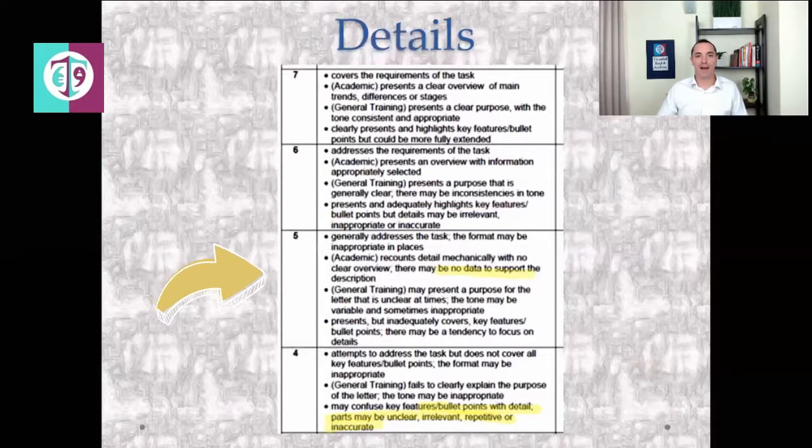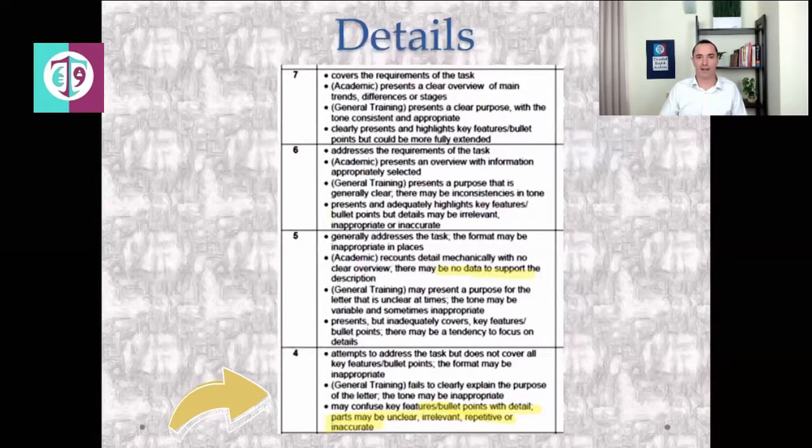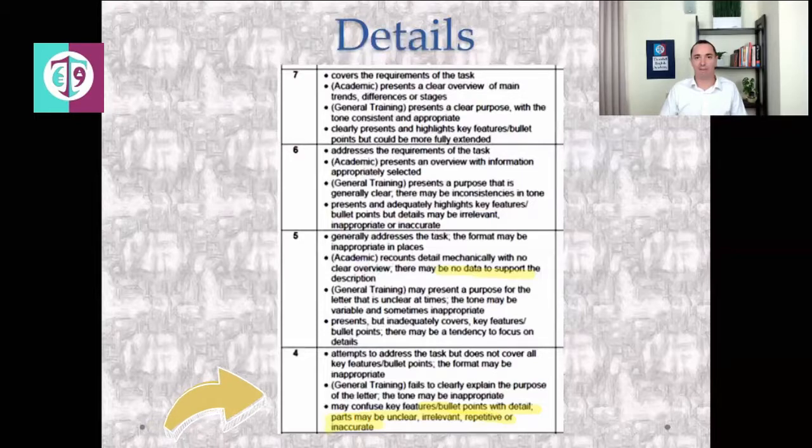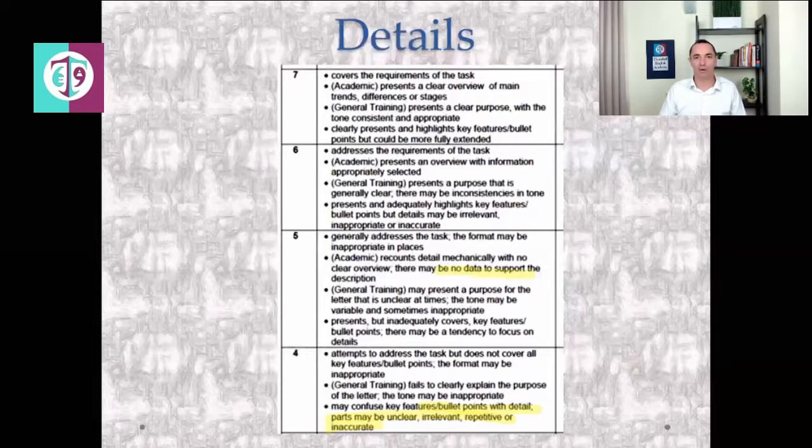And we can see down in the band five and band four, there's going to be more inaccuracies. And band four, there may be a lot of irrelevant, inaccurate, repetitive detail. This is what we want to avoid. If the examiner sees lots of mistakes in the details, they're definitely going to give you a band four. So how do we avoid that? Let's have a look.